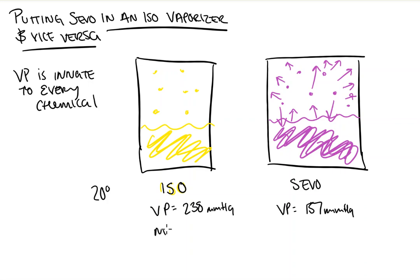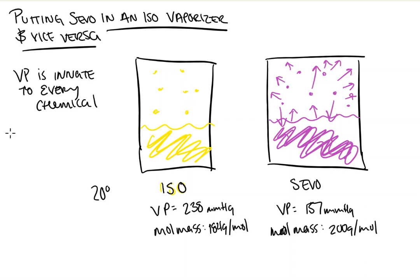The molecular mass of isoflurane is 200 grams per mole, and sevoflurane is 184 grams per mole. Looking back at our equation — pressure equals mass times acceleration over area — in this scenario our area is the same for both; it's a constant. So now our pressure is equal to our mass times our acceleration.